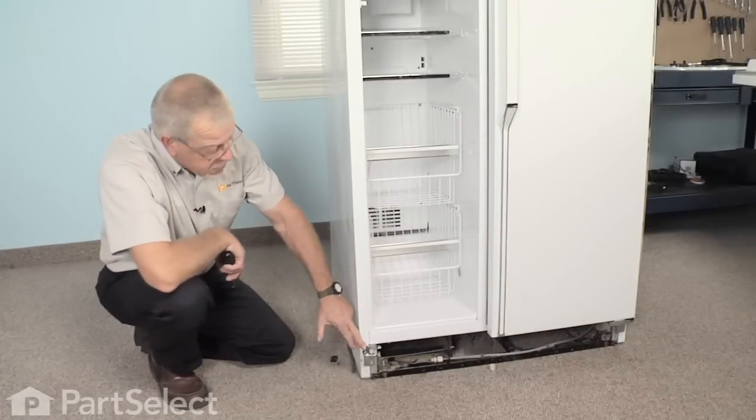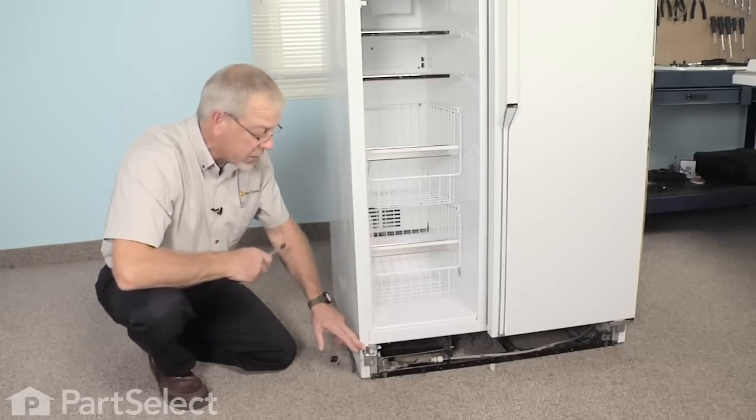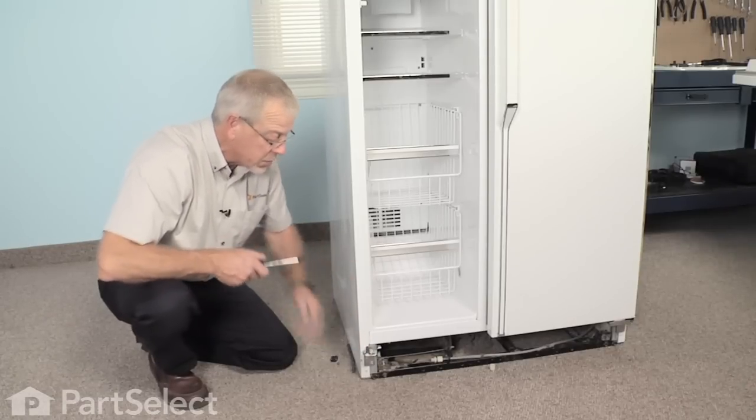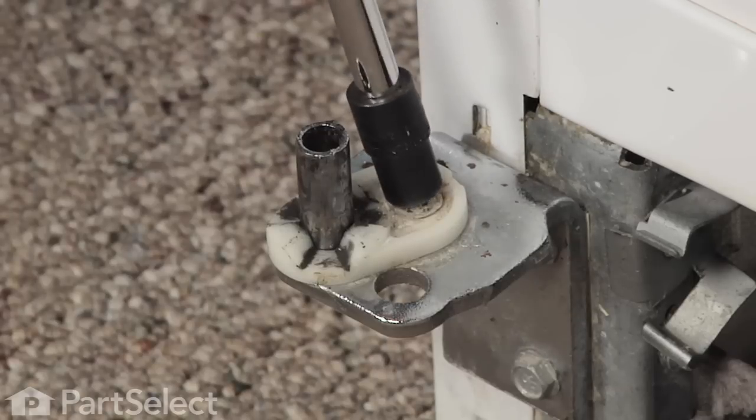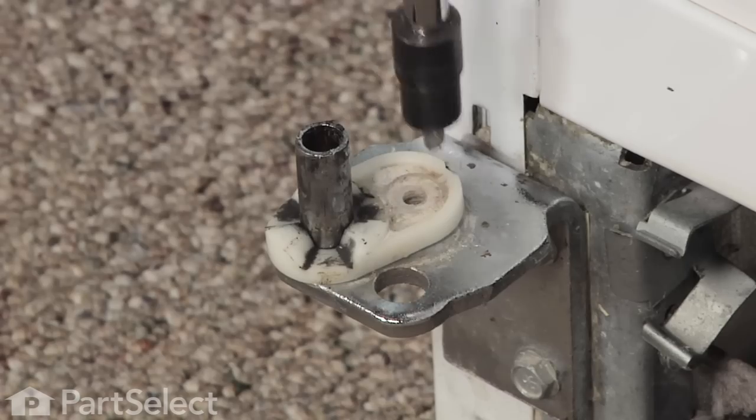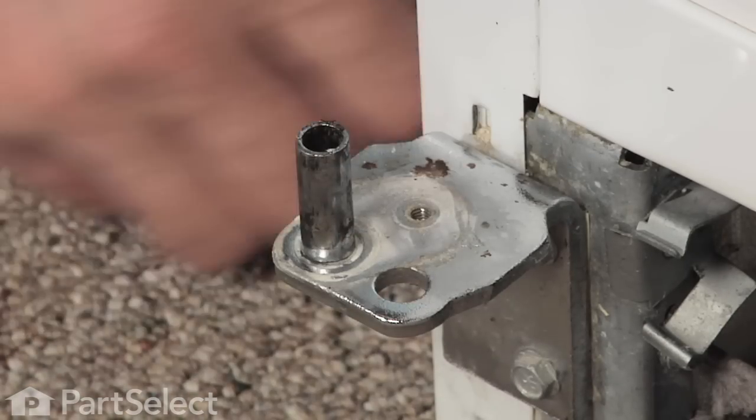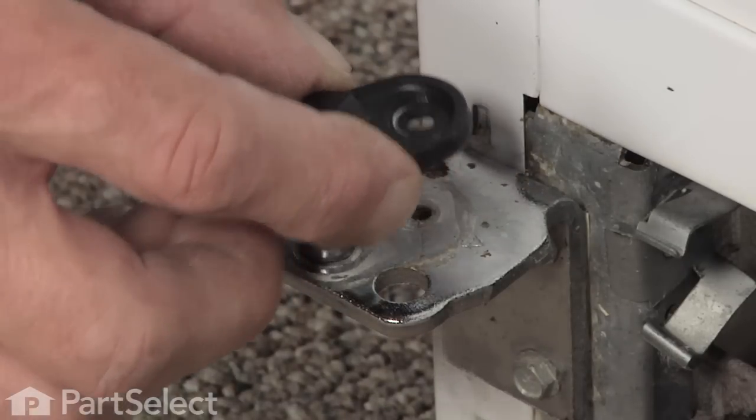The lower cam on the freezer door section is essentially the same as the lower cam on the refrigerator door section. It's a simple matter of taking a quarter inch hex head screw out of the hinge plate, lift the cam off of the hinge, slide the new one in place.